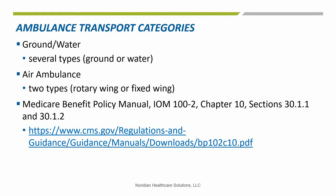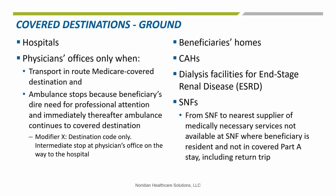There are several categories of Ground Ambulance Services and two categories of Air Ambulance Services, which can be found in IOM 100-2, Chapter 10, Subsection 30.1.1. When all other program requirements for coverage are met, ground ambulance transports are covered only to and from specific destinations.